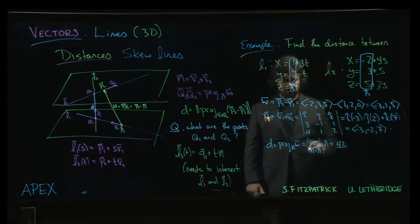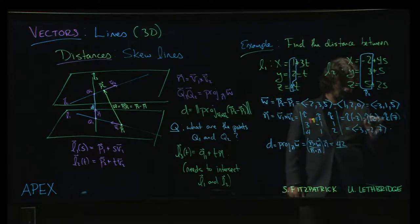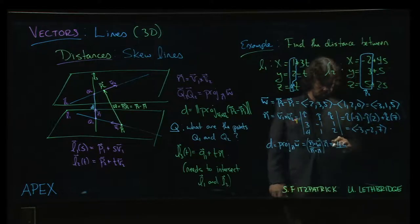9 minus 2 plus 35. So 35 plus 7 is 42. And then n dot n, 49 plus 4, we're at 53 plus 9. Gets us to, is it 62?